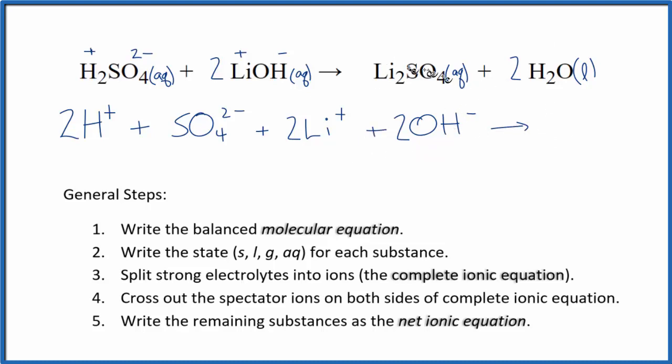Now we can do the products. So we have plus 2 minus. And then for liquids, we don't split those up. We won't break the water apart into its ions. So we have our Li plus in the products, and we have 2 of those. Plus we have a sulfate, SO4 2 minus. And then we have the 2 water molecules. We don't split those up. And this is what is called the complete ionic equation.